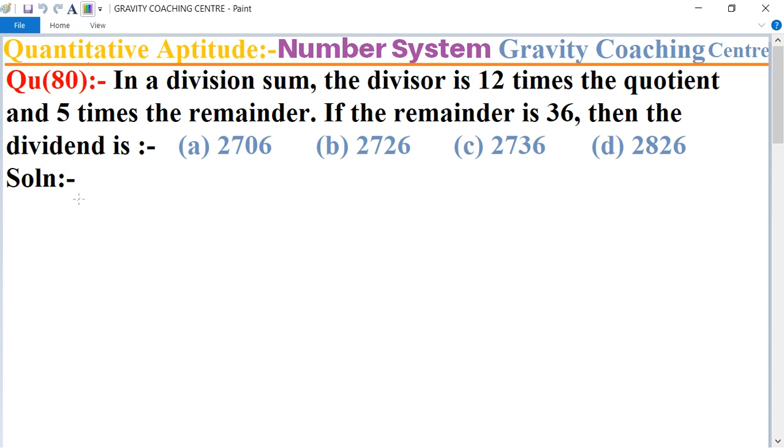In this question, given the divisor is 12 times the quotient, so here D equals 12 times the quotient and 5 times the remainder. 5 times the remainder.